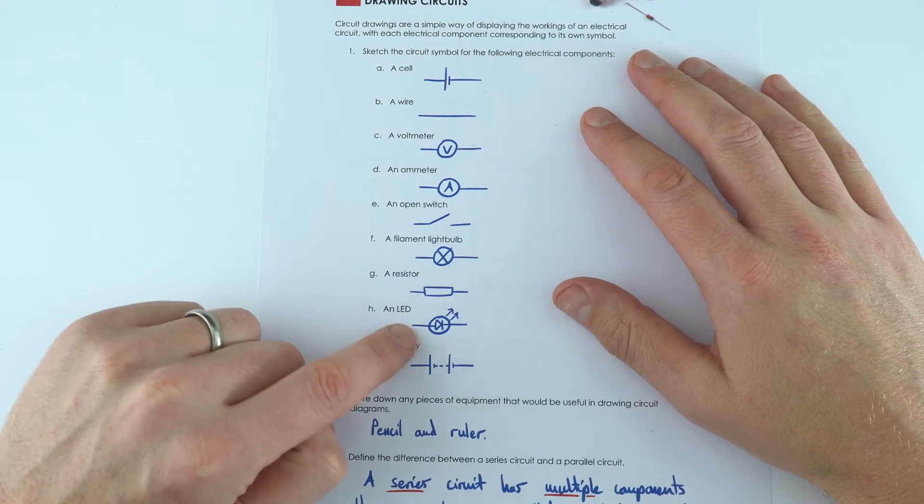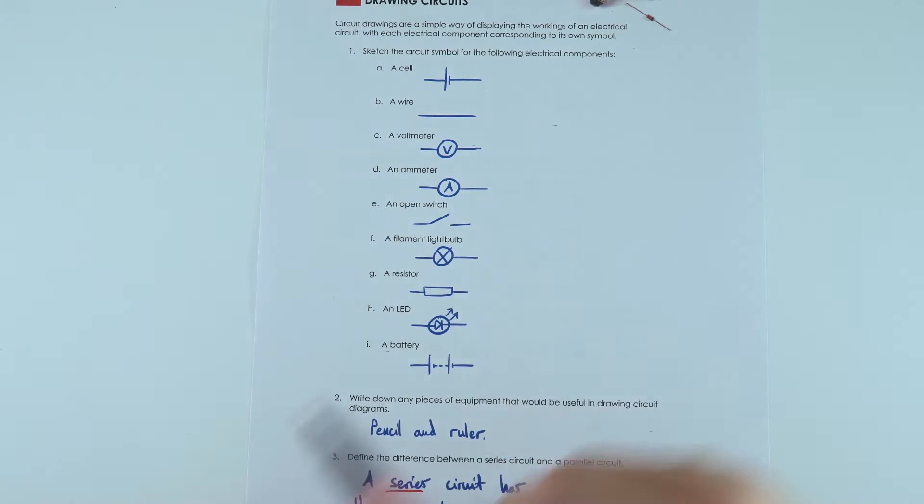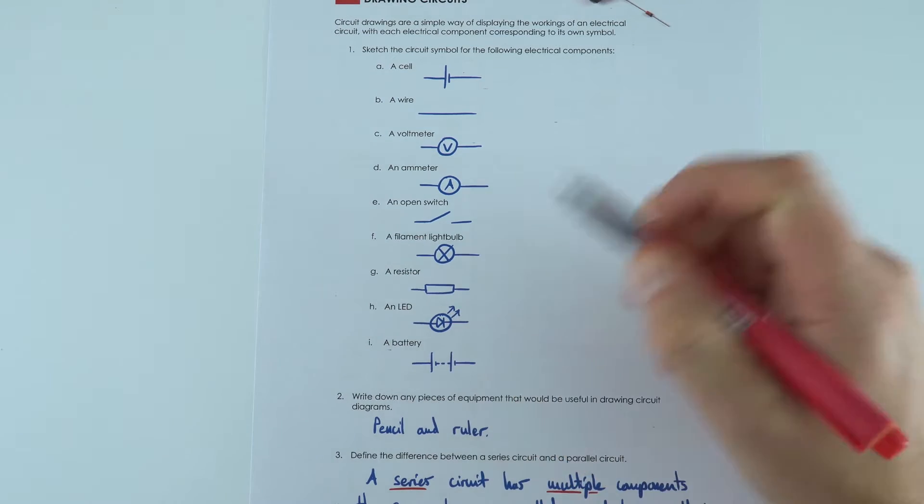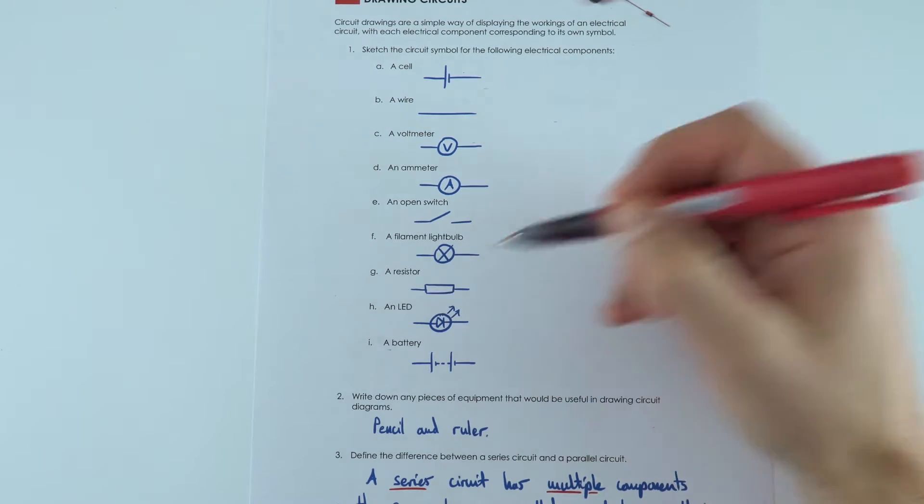This one here for an LED, sometimes you have a circle around it, sometimes you don't. But what this is really showing is that there's light being emitted and that's very different to a light dependent resistor where we have arrows coming into that component.